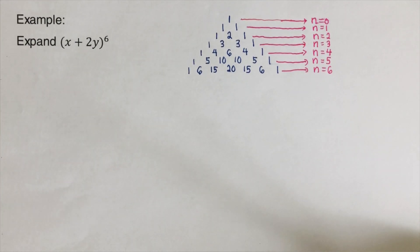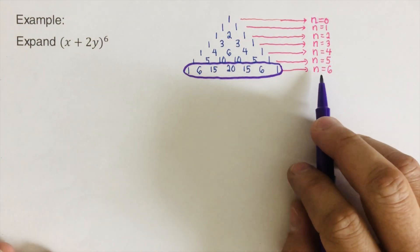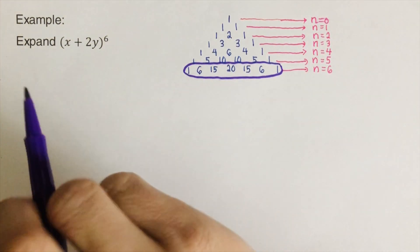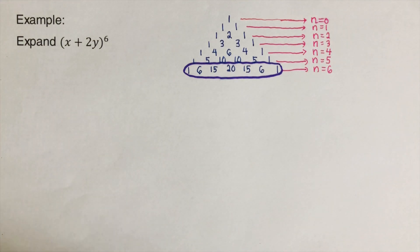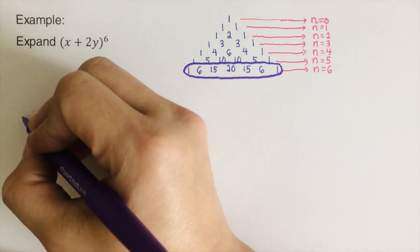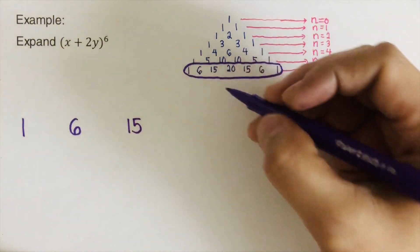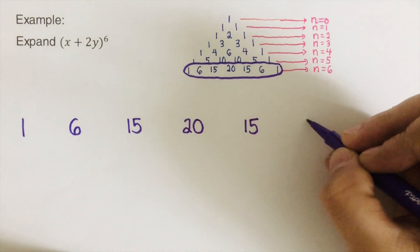Now let's take an example with an exponent of 6. The expression is (x + 2y)⁶. I've already written the Pascal triangle, so the row for n equals 6 is: one, six, 15, 20, 15, six, one. I'll write those numbers out and separate the parts so we don't mix them up.